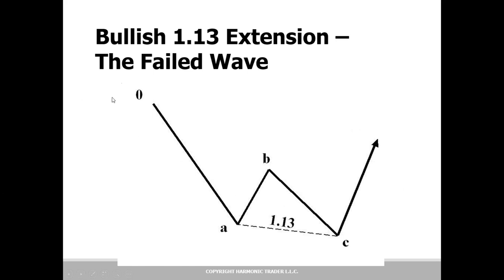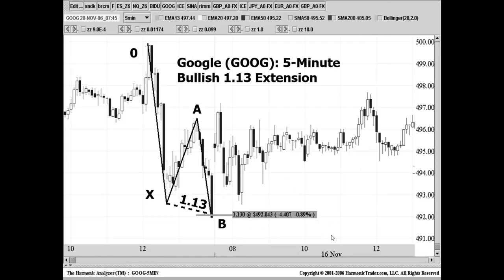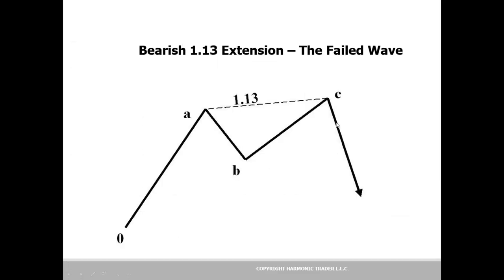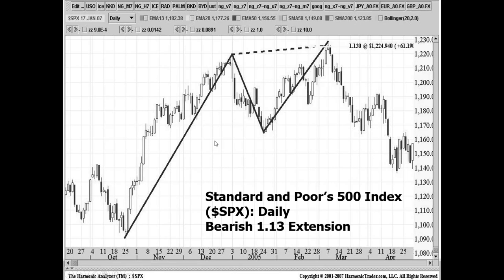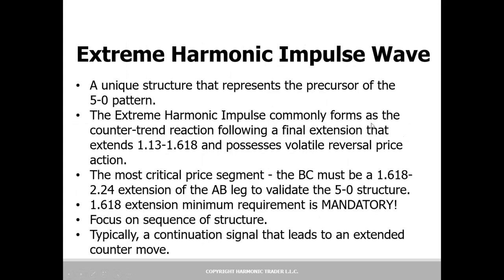We combine the two: looking at this failed wave as a bullish wave — some kind of extended move down where the 1.13 nominally takes out the prior low. This is a pattern unto itself, a kind of reversal pattern to become aware of, especially with indicator confirmation like HSI and RSI. For the bearish extension of the 1.13, we've actually seen that recently in the NASDAQ. We look for that failed wave that just doesn't bust through the 1.13, and combine that with the extreme harmonic impulse wave.